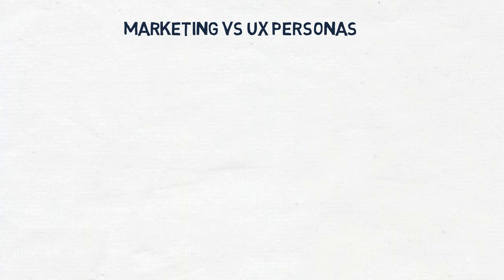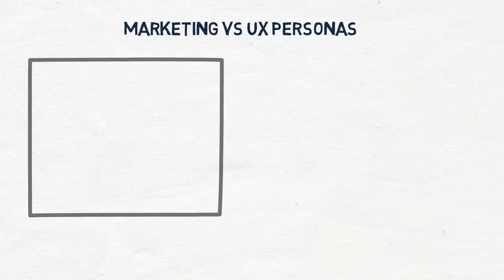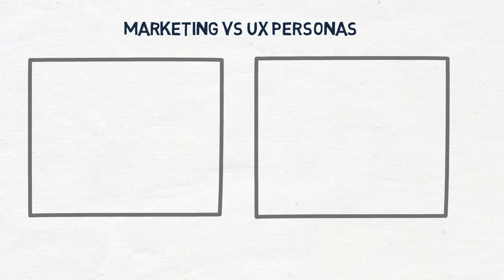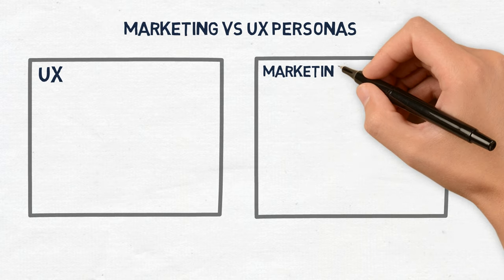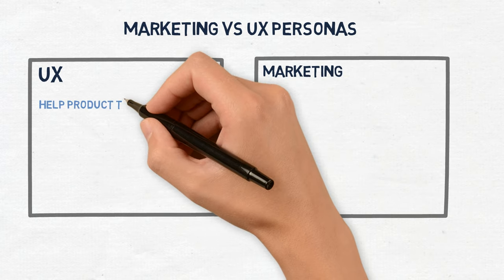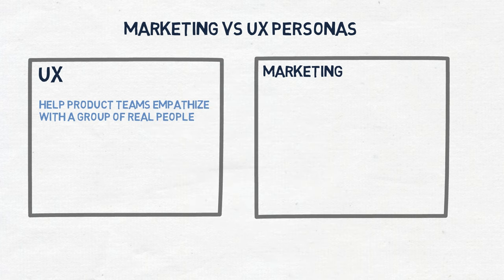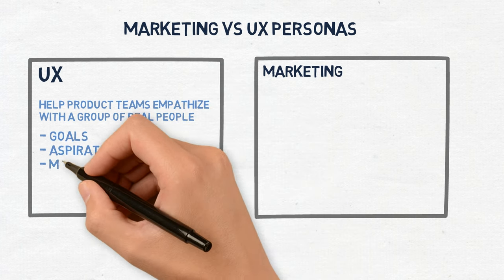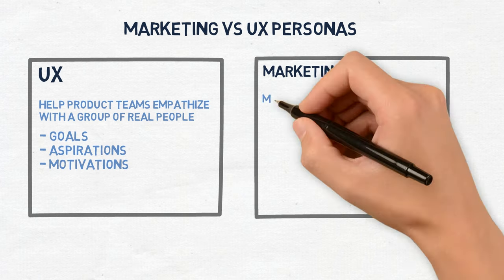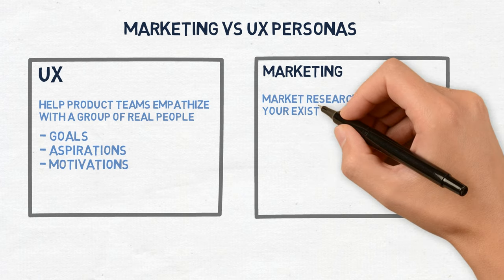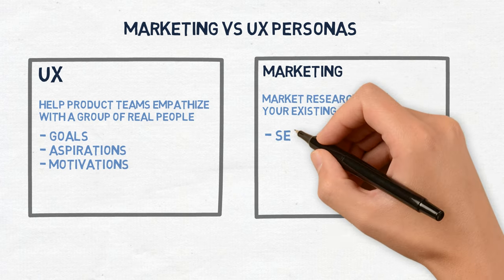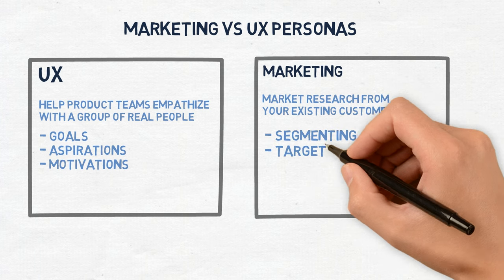There are two main types of personas: marketing personas and UX personas. We are going to focus on UX personas, which are created to help product teams empathize with a real group of people to understand their goals and aspirations. UX personas are created from various research methods and are used to drive product user experience. Marketing personas are based on market research from your existing customers, which is useful for segmenting and targeting.